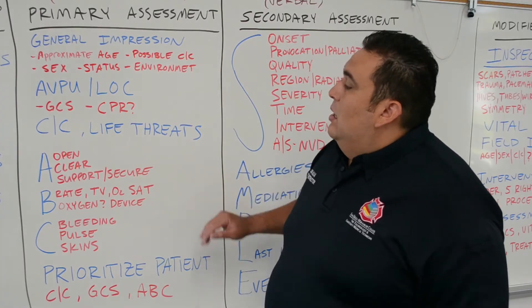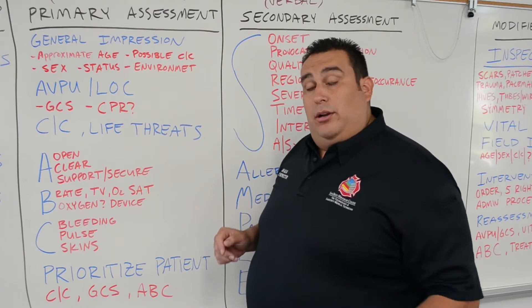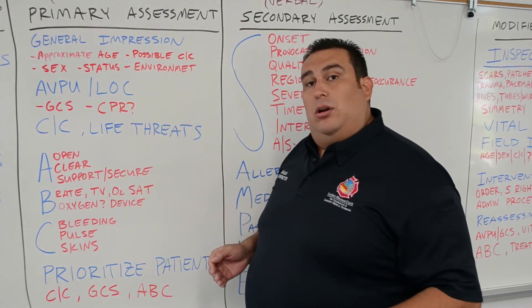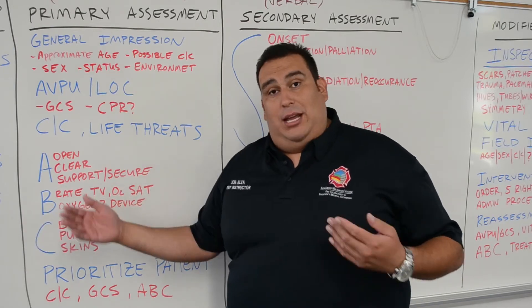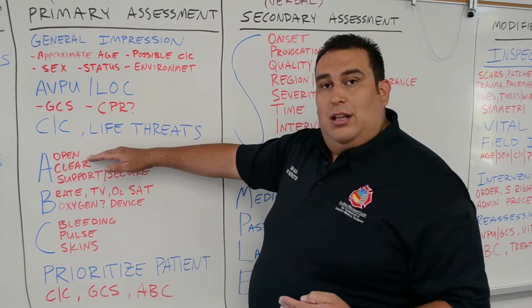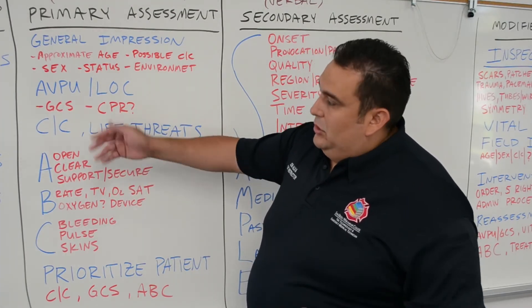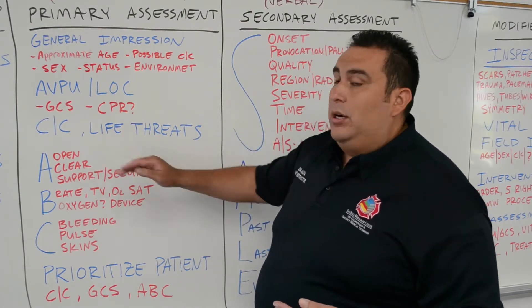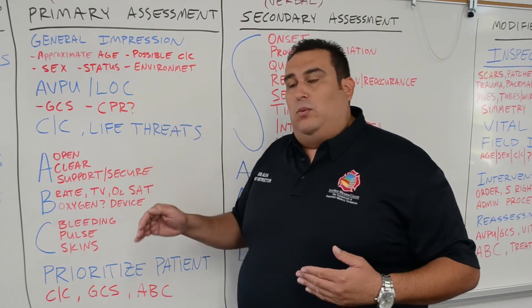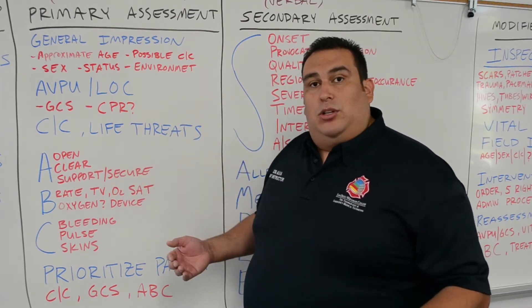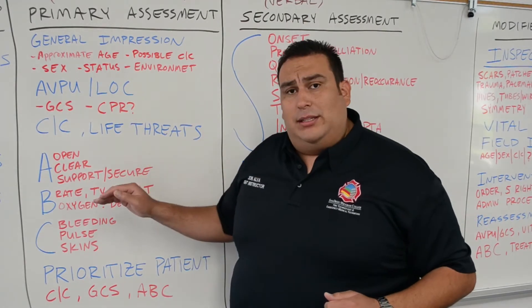Now we move on to ABCs. For airway, we're going to open it using either a head tilt chin lift or a jaw thrust maneuver, depending on whether we're considering spine immobilization. If spine immobilization is a concern, use a jaw thrust. For a purely medical patient with no spinal considerations, use a head tilt chin lift. Then clear the airway — look inside for obstructions. Do you need to suction? Do you need to remove foreign bodies? Support and secure the airway.